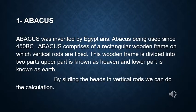The first device we will study is Abacus. We are familiar with this calculating device as it is used in pre-nursery and nursery classes to give fundamental ideas of counting in a play-way method. Abacus was invented by Egyptians and later modified by Chinese and Japanese people. Abacus consists of a wooden rectangular frame divided into two parts. The upper part is called heaven and the lower part is called earth. By sliding the beads on vertical rods, we can perform calculations.